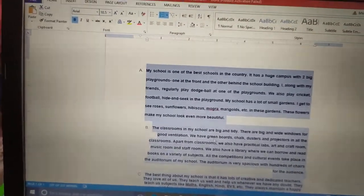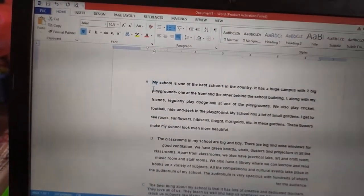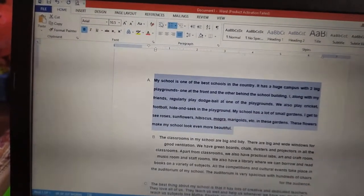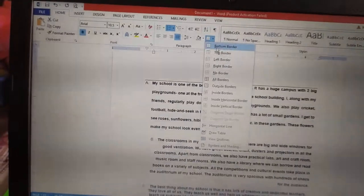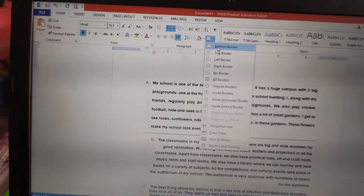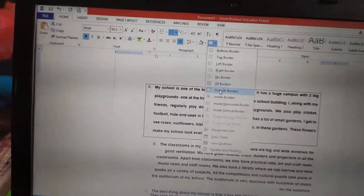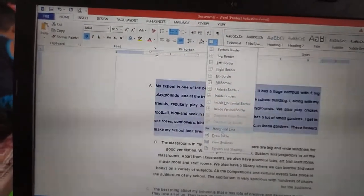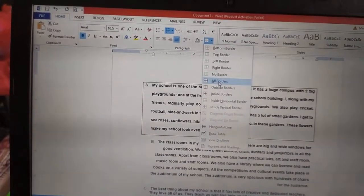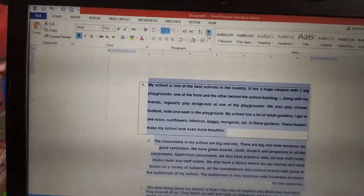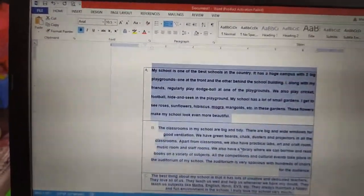Next, how to apply border for the paragraph. Now, this is the border button. Bottom border, top border, left border, right border. All the sides border. Outside border, inside border. These are all the borders available. Clear everyone. Yes, this is how we are applying the border.